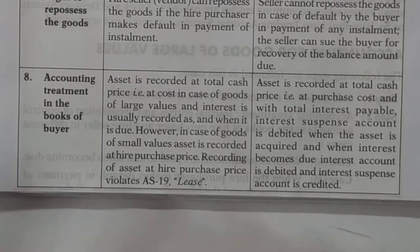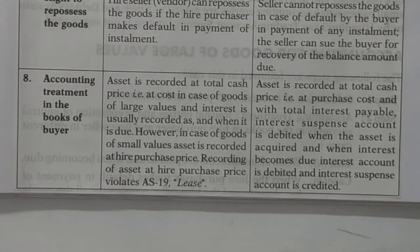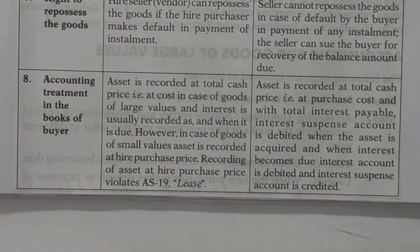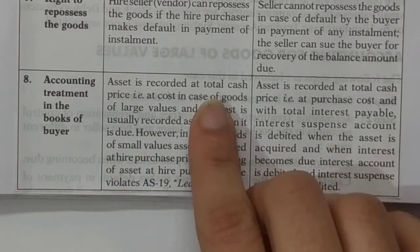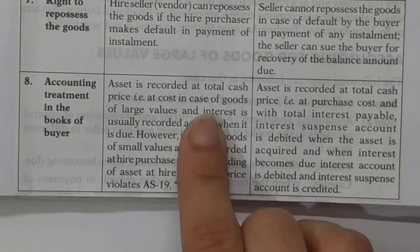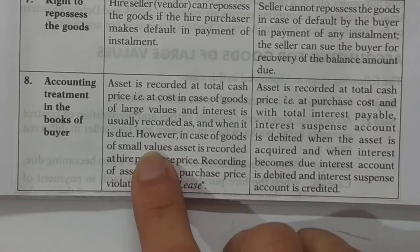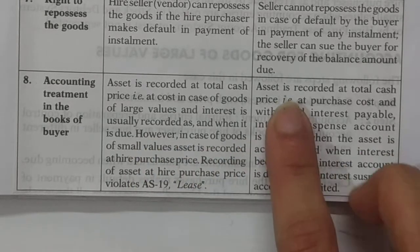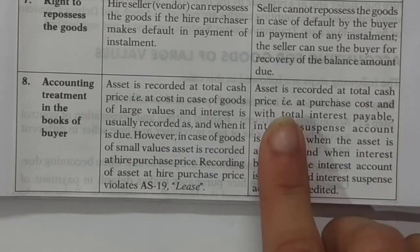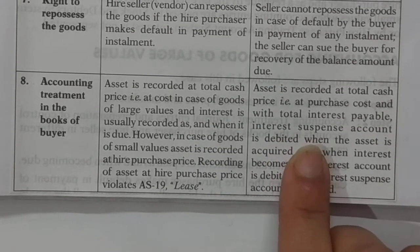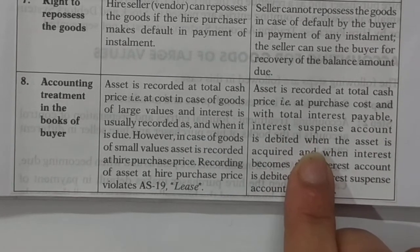The last point of difference is accounting treatment in the books of the buyer. In the hire purchase system, the asset is recorded at the total cash price (TCP), and interest is recorded only when it becomes due. In the installment purchase system, the asset entry is made at the hire purchase price, which already includes the interest component.